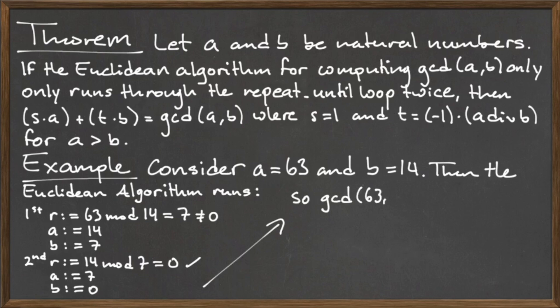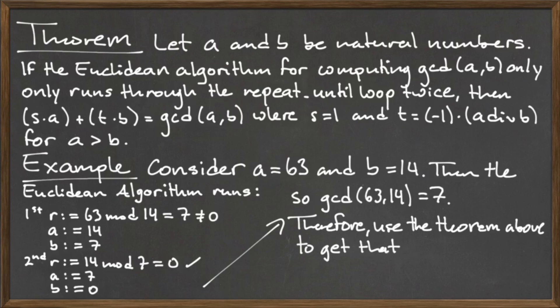Since r is equal to 0, we return the value 7, which is the gcd. So the gcd of 63 and 14 is 7.